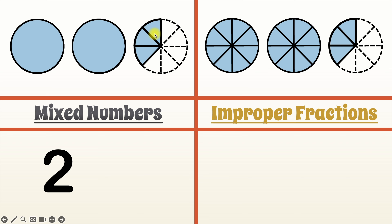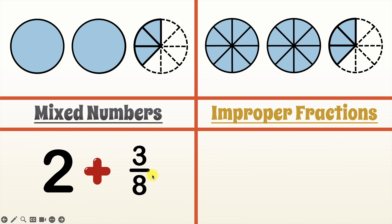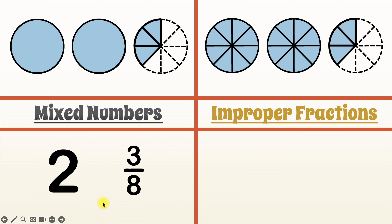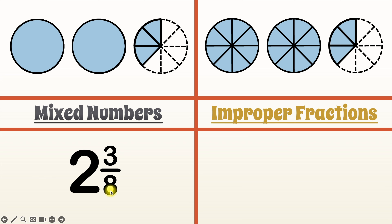But this third circle is not a completely filled circle. Out of the eight possible total pieces, there are only three that are filled. So we would show that using the fraction three over eight. In order to show this using mixed numbers, we add our whole number and our fraction together — and that's not as bad as it sounds, because when you're adding a whole number and a fraction, you just put them together. So the mixed number that shows this model is two and three over eight, or two and three eighths.